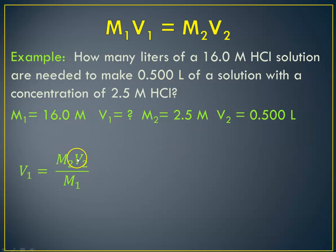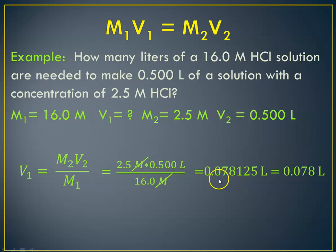So here's my equation rearranged to solve for V1. It's M2 V2 over M1. And now we're going to plug in our concentrations. And we're going to cancel out molarity. And we'll see that what we end up needing is a volume of 0.078125 liters. Looking up here, 2 sig figs. So rounding to 2 sig figs, it's 0.078 liters.